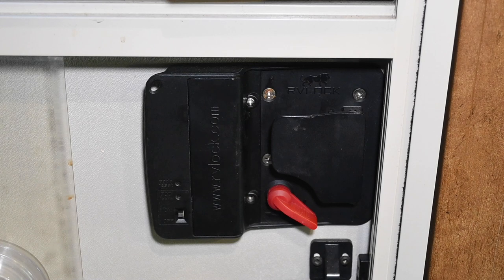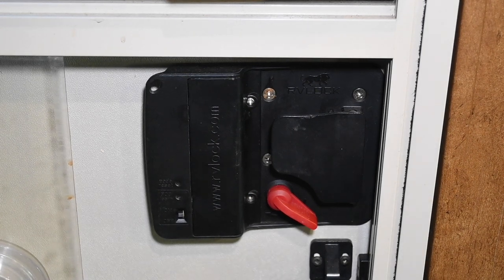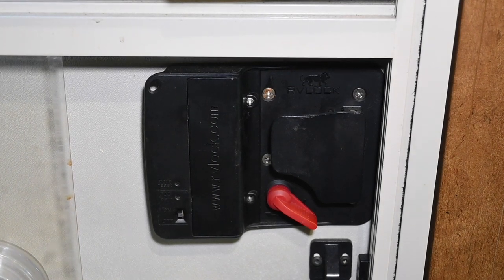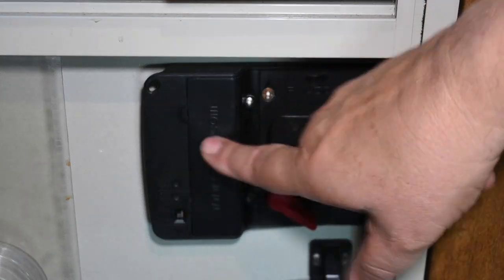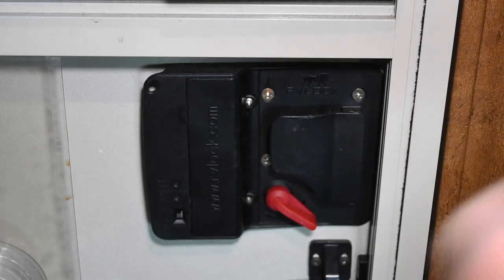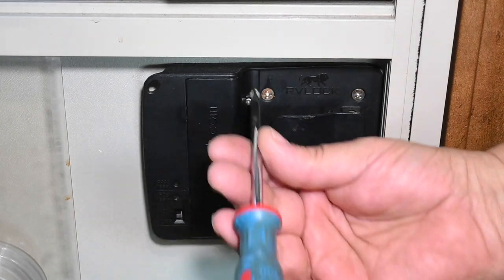In episode 27 of the five things series, we start out with an improvement to the RV lock mechanism. One ritual that we go through every year when we get the RV ready for the season is to replace a whole bunch of batteries, and that also includes our RV lock door lock. There's four batteries in here that we have to replace.